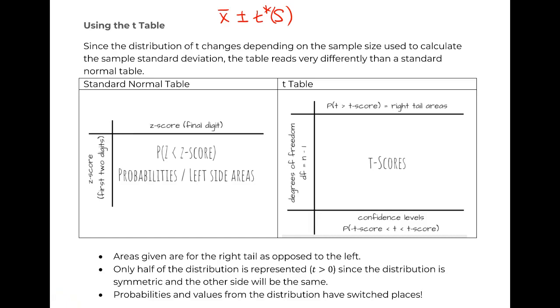Our t table is different than our standard normal because the t changes depending on the sample size. As we said, bigger sample size, smaller tails, closer to the standard normal.